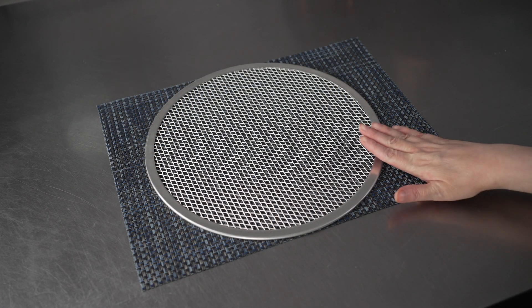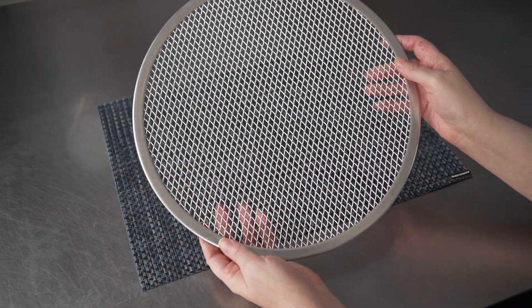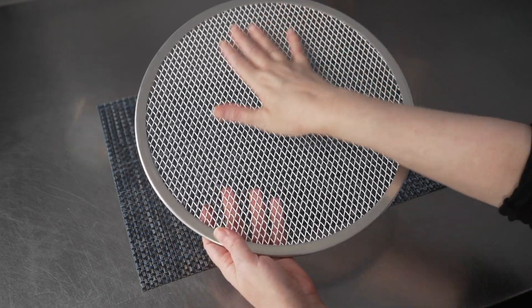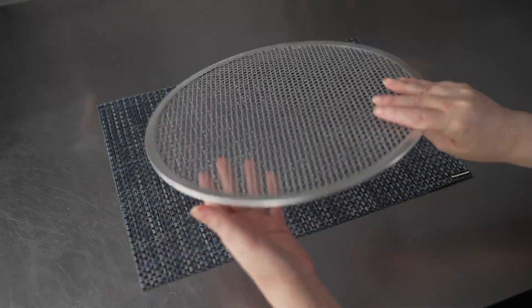It's an aluminum mesh pizza screen with a 12-inch diameter. It's also available in a 16-inch size as well if you want to make bigger pies.